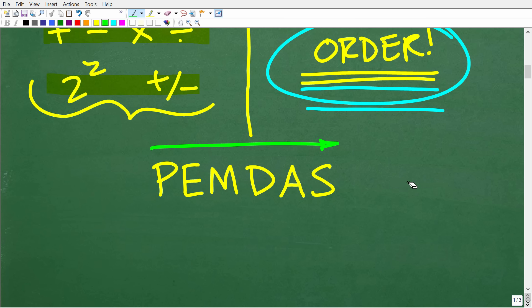So PEMDAS is an acronym. These letters stand for something. And basically, it's a checklist that goes from left to right. Now, before I tell you what these letters stand for, let me give you a little memory aid here, a little mnemonic. So that is, please excuse my dear Aunt Sally.